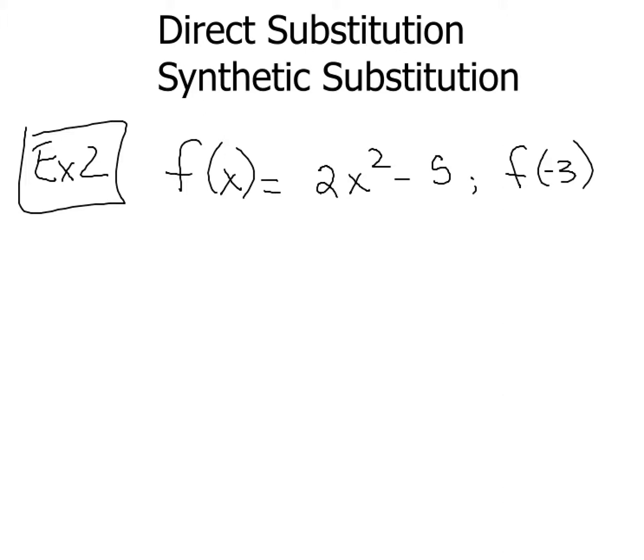Now for direct substitution, this time we're plugging in -3 anywhere there's an x. So f(-3) is going to give me 2 times (-3)² - 5. Well that's pretty straightforward stuff. (-3)², this is where you have to be careful. Common error right here, people will put -9 and it's not, it's positive 9.